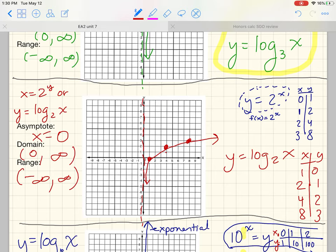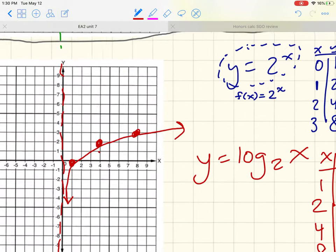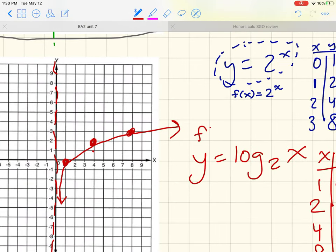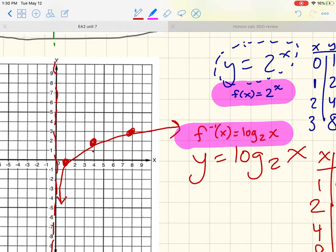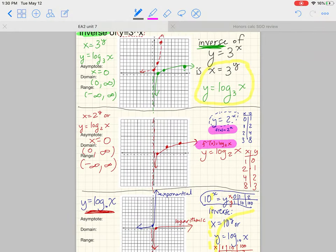So when you see f of x is 2 to the x, I do want you to mention that the inverse of f of x is log base 2 of x. So for f of x equals 2 to the x, f to the negative 1 of x equals log base 2 of x, indicating that those functions are inverses of each other.